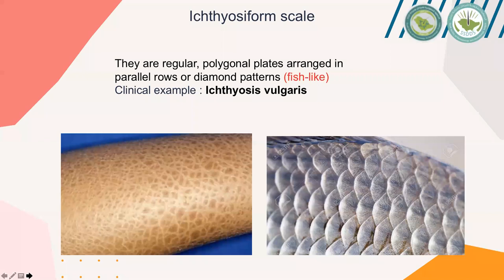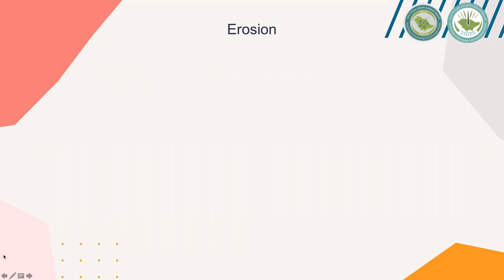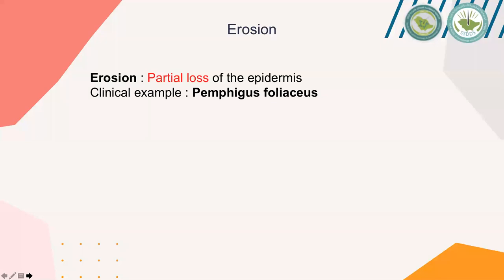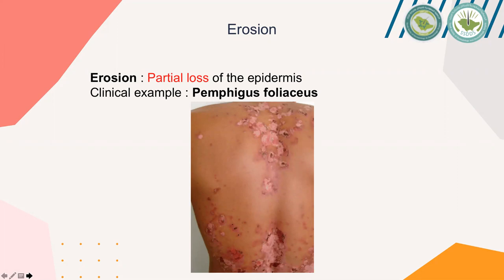Now we'll move to erosion. Erosion is partial loss of the epidermis. It has a similar definition to excoriation, but in excoriation the lesions are caused by an exogenous injury — usually the patient scratching — whereas in erosion the lesions occur spontaneously without the patient doing anything to the skin. A clinical example is pemphigus vulgaris, a pemphigobullous autoimmune disorder causing flaccid bullae; when these rupture, they take the upper part of the epidermis, causing erosions over the back and torso.